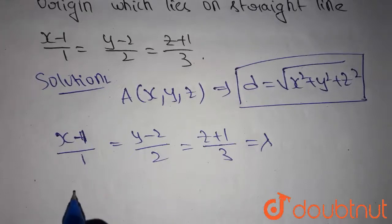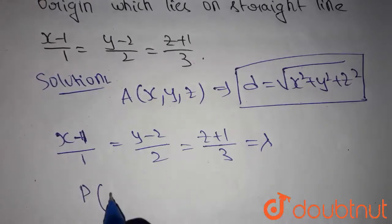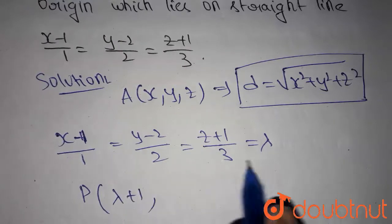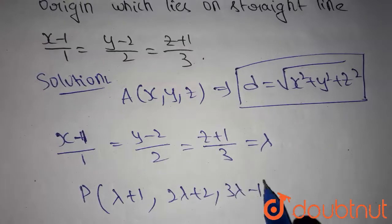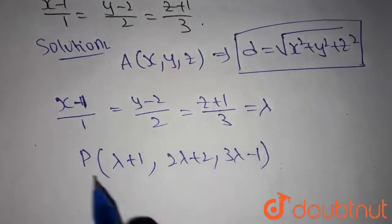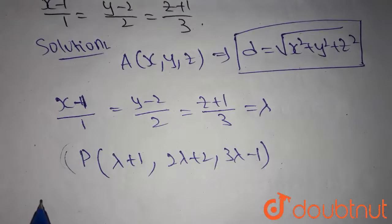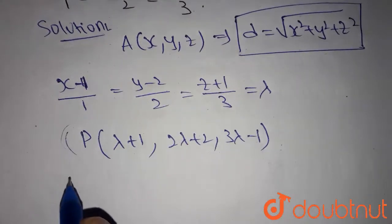Any point on this line can be written as (lambda + 1, 2 lambda + 2, 3 lambda - 1). Let's say this is the point which is at distance root 6 units from the origin.